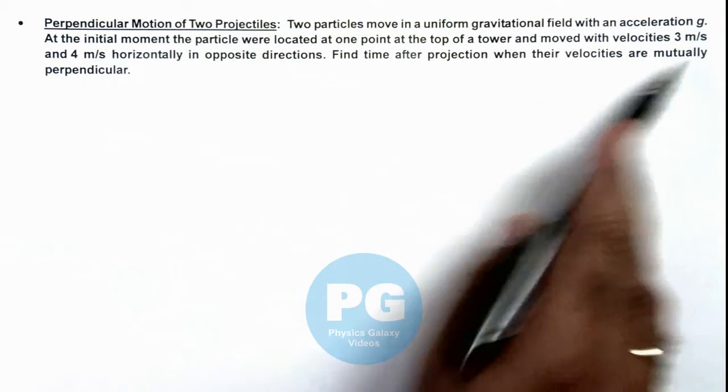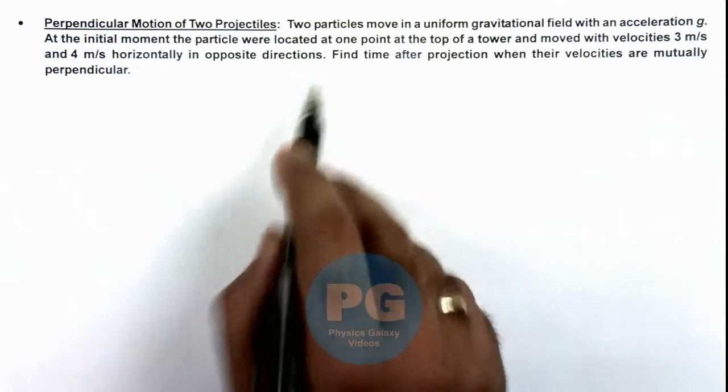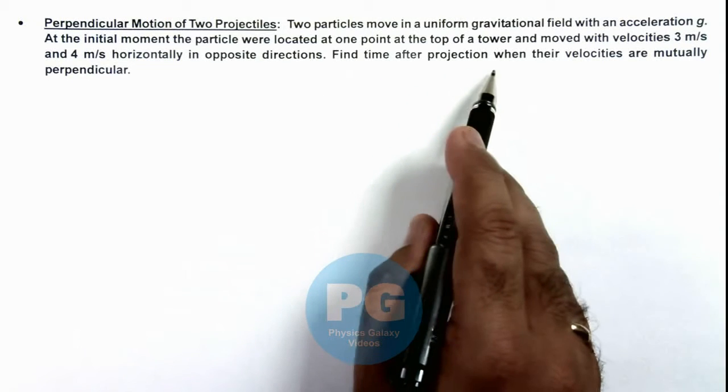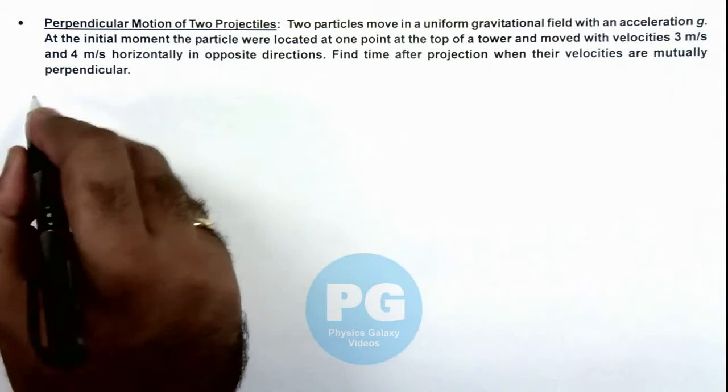3 meters per second and 4 meters per second horizontally in opposite directions. We are required to find time after projection when the velocities are mutually perpendicular.